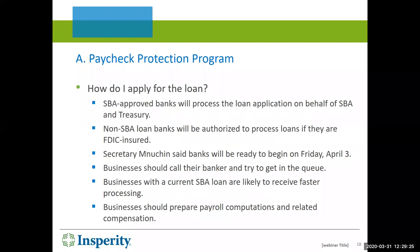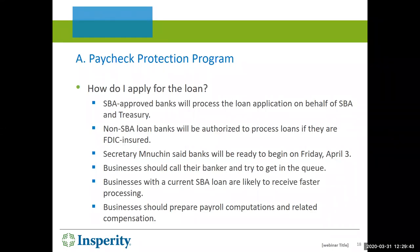How do you apply? SBA-approved banks are going to process these loan applications on behalf of the SBA and Treasury. Depending on where you live, it may all be done online — you may not have a single meeting with your bank. They're going to add banks because they'll quickly find out they have more applications than they can process. I would suggest you call your banker and ask if they are SBA-approved or a preferred lender and try to get in the queue. Most bankers say those who have dealt with the SBA before are likely to get faster processing because they already have the data. Prepare your payroll computation now — figure out your 12-month average payroll cost and have it documented.